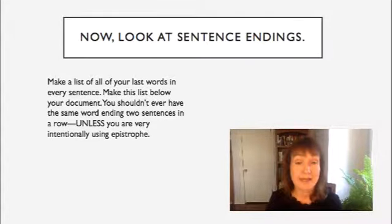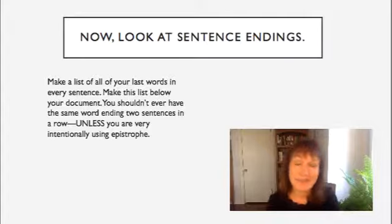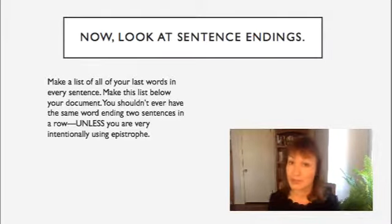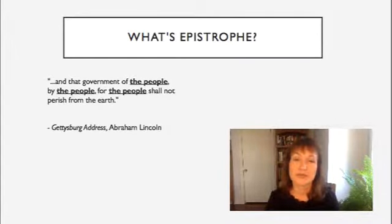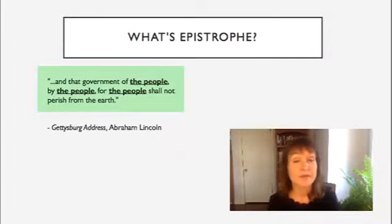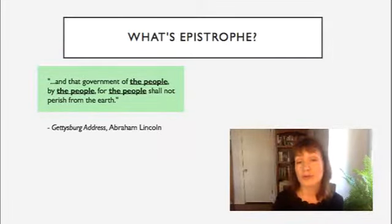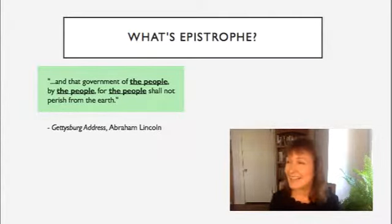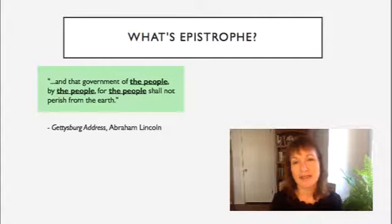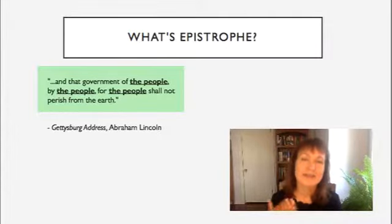Now look at sentence endings. Make a list of the last word in each sentence and put the list below your document. You shouldn't have the same word ending two sentences in a row unless you're intentionally using the rhetorical device known as epistrophe. What is epistrophe? Famously, Abraham Lincoln used it in the Gettysburg Address when he wrote, 'and the government of the people, by the people, for the people, shall not perish from the earth.' Epistrophe, like anaphora, uses repetition to help us understand the importance of a particular phrase — here the repetition emphasizes that it's the people, the people, the people who are important.